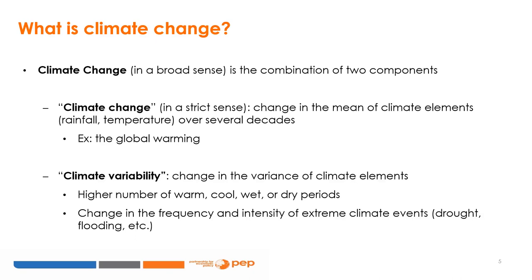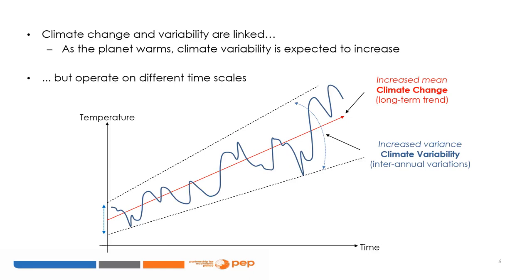Two, changes in variance of climate elements, or climate variability, which describe the way they depart from their average value in given months, seasons, years or decades, therefore producing warm, cool, wet or dry periods. It also involves changes in the frequency and intensity of extreme weather events, such as droughts or floods. These two components of a changing climate are linked. For instance, it is widely projected that with a warming climate, climate variability will also increase.